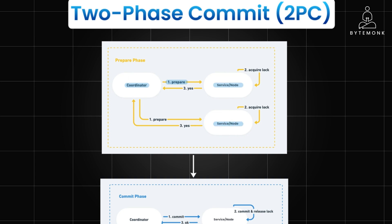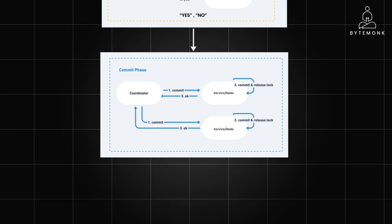Each participant checks if it can commit the transaction and responds with yes if it can, or no if it can't. In the commit or rollback phase, if all participants respond with yes, the coordinator sends a commit message to all participants and they permanently apply the changes. If even one participant responds with no or doesn't respond within a timeout, the coordinator sends a rollback message and all participants undo the changes they made.